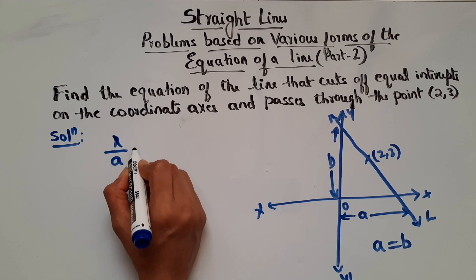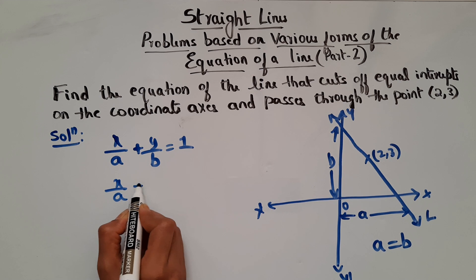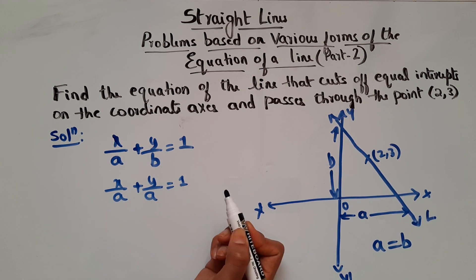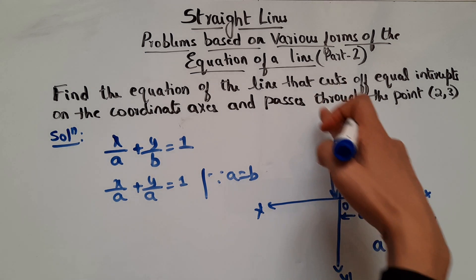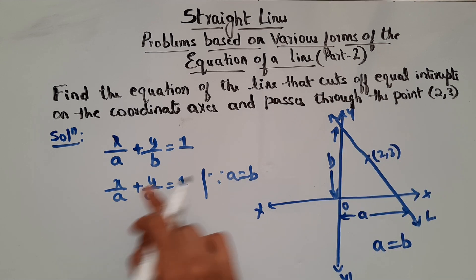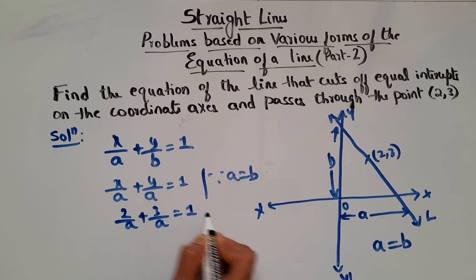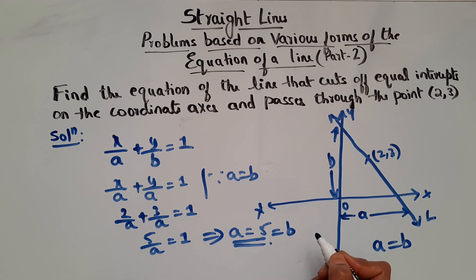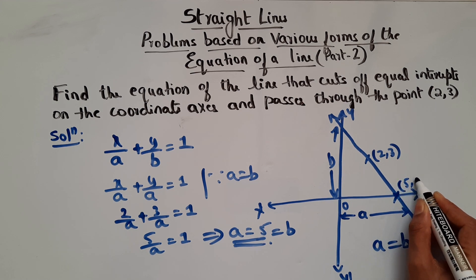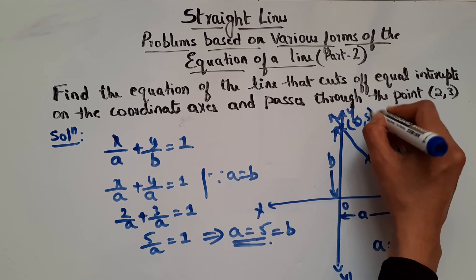Since intercepts are given, we can go for intercept form: x/A + y/B = 1. We know A = B, so x/A + y/A = 1. Since the point (2,3) lies on this line, it satisfies the equation. Substituting: 2/A + 3/A = 1, so 5/A = 1, which gives A = 5. So A = B = 5, meaning the intercepts are (5,0) and (0,5).